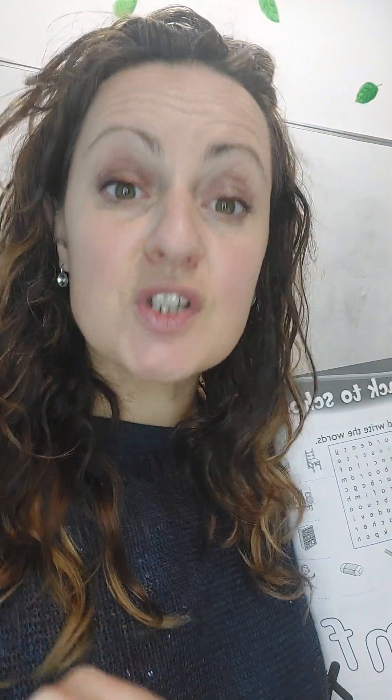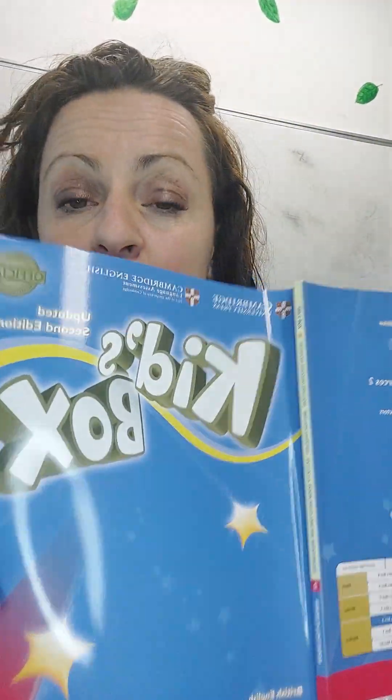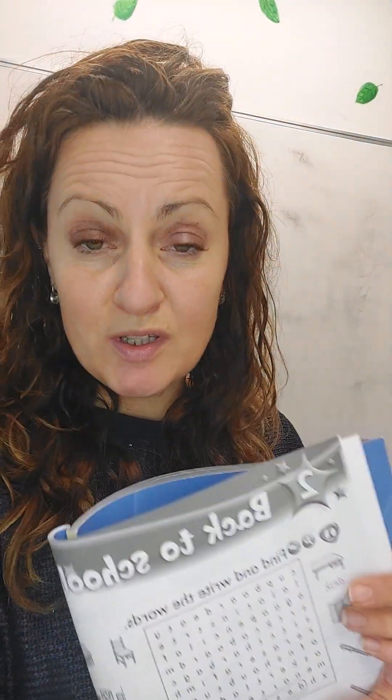Hello. I'm here to help you with unit number two, first lesson. The topic of the first lesson in unit two, in Kids Box two, unit two is 'there is, there are.'